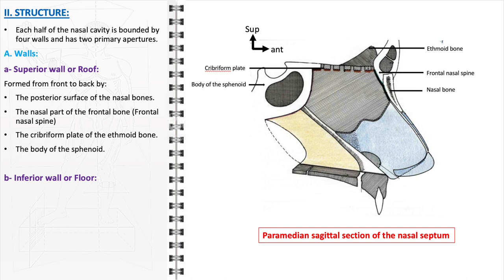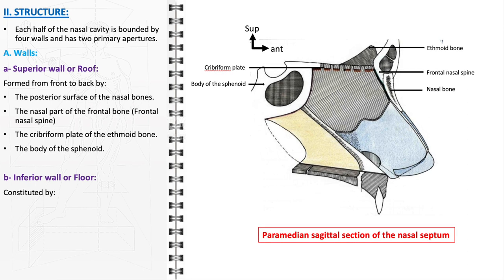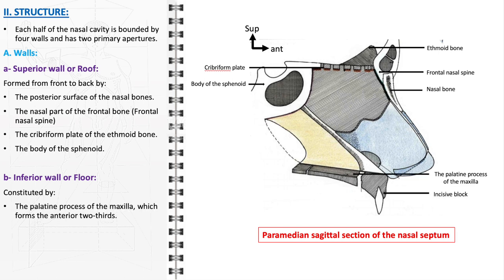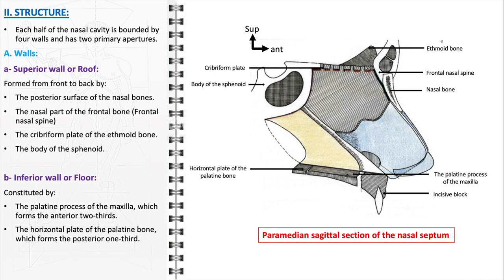The inferior wall, or the floor of the nasal cavity, is mainly composed of two parts. The anterior two-thirds is formed by the palatine process of the maxilla. This portion is significant for its contribution to both the floor of the nasal cavity and the roof of the mouth. The remaining posterior one-third is constituted by the horizontal plate of the palatine bone, providing a sturdy base and demarcating the separation between the nasal and oral cavities.